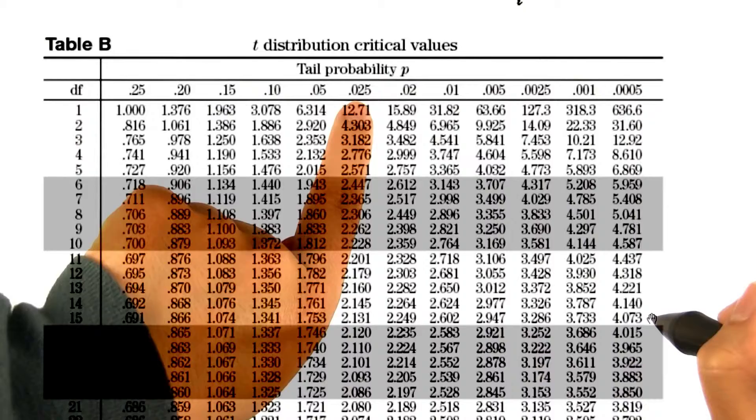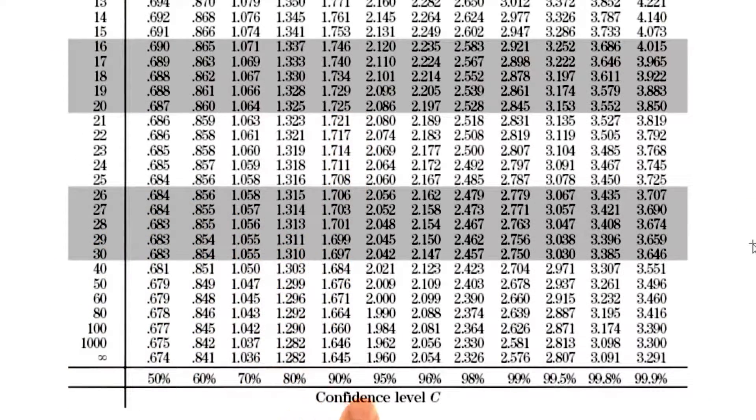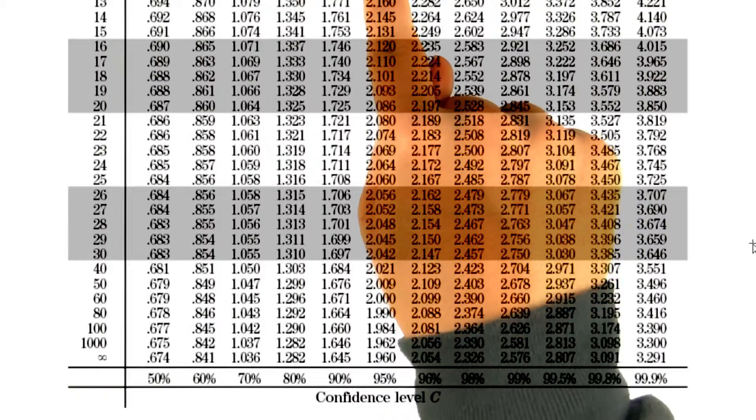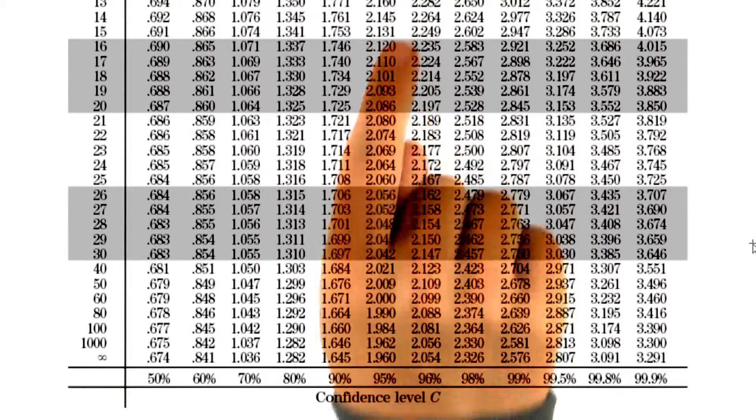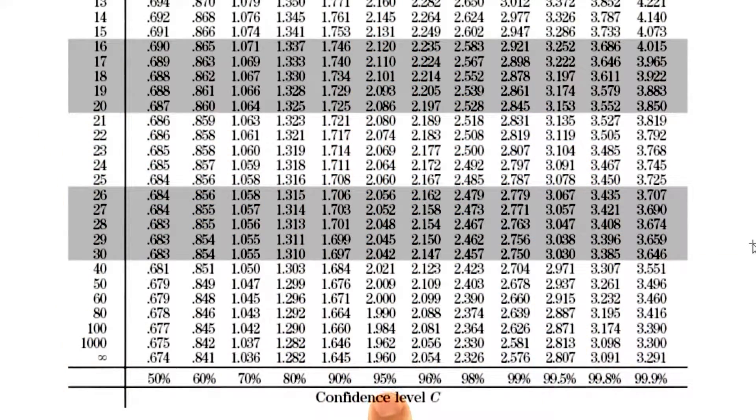And again, we want 0.025 in each tail. Notice that it also says at the bottom confidence level C, and here we have 95%. This is the same as how at the top of the column it has 0.025 in either tail. That's equivalent to a 95% confidence interval. Pretty cool. And we see that the t critical value is 1.984 and negative 1.984.